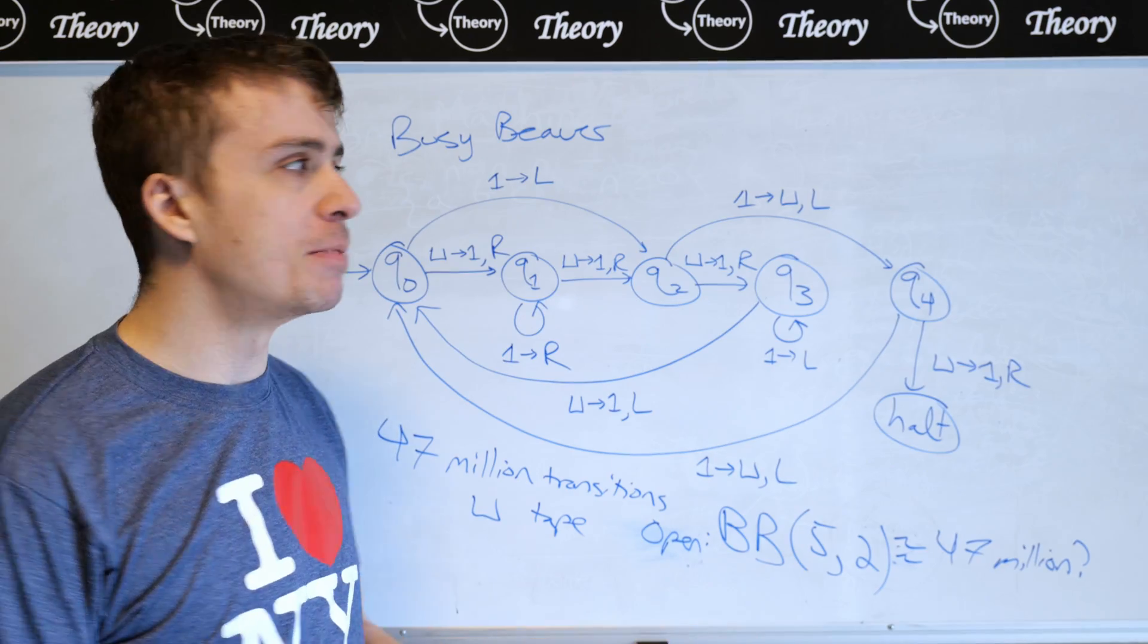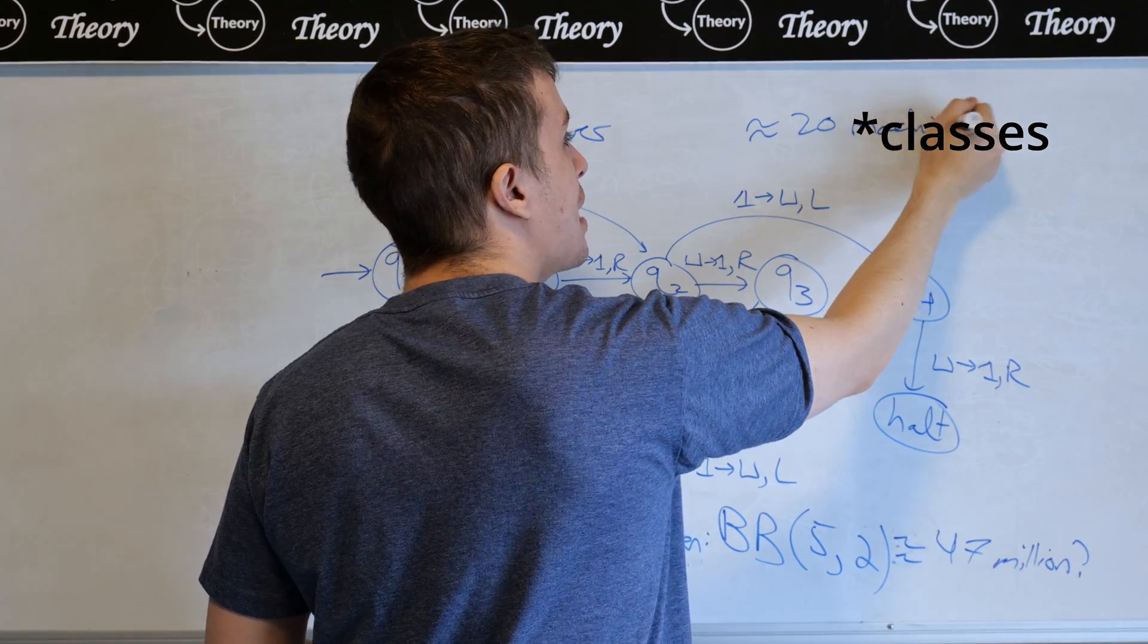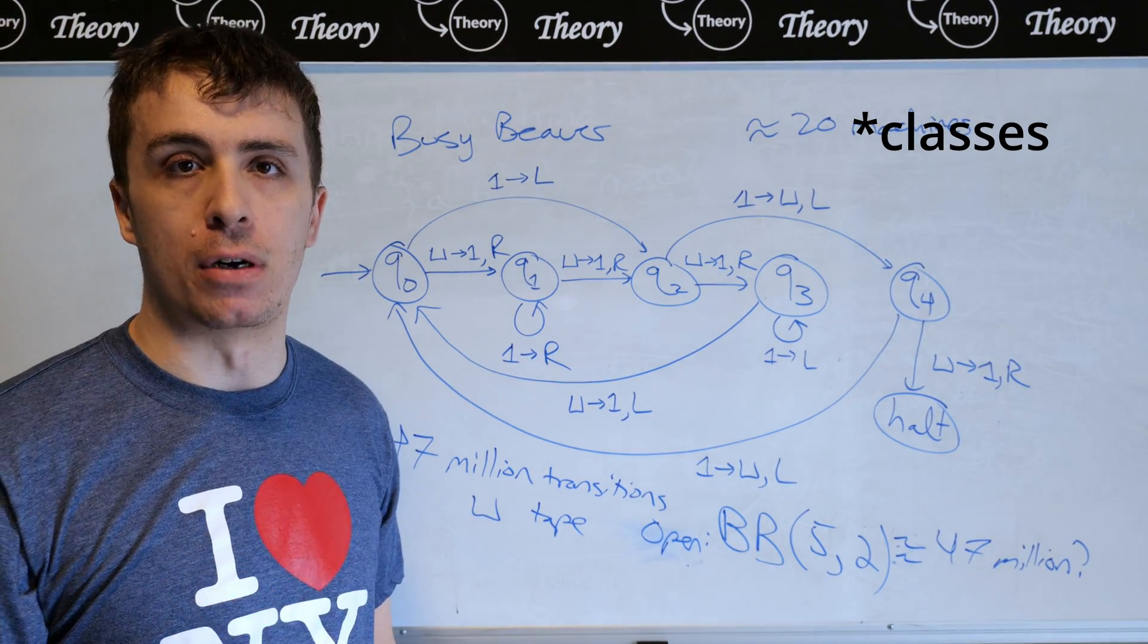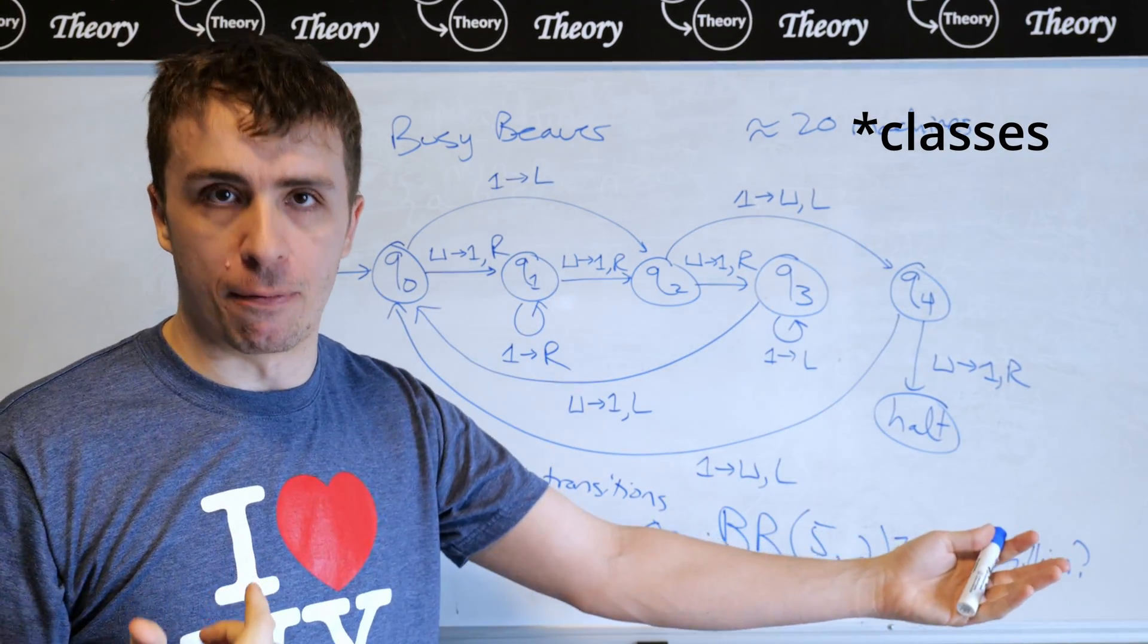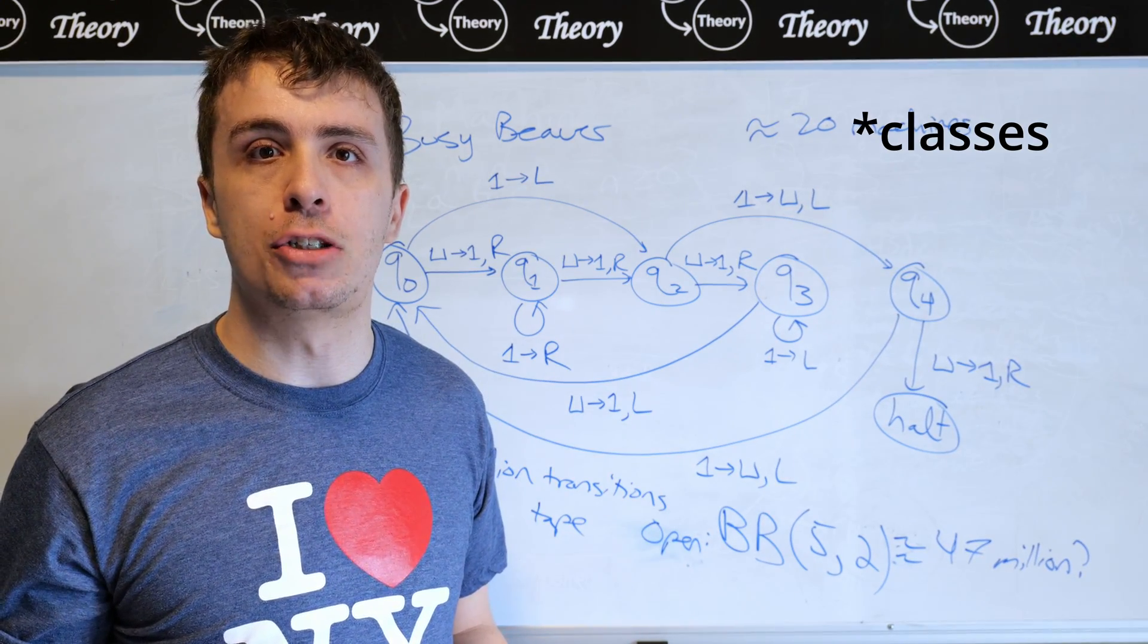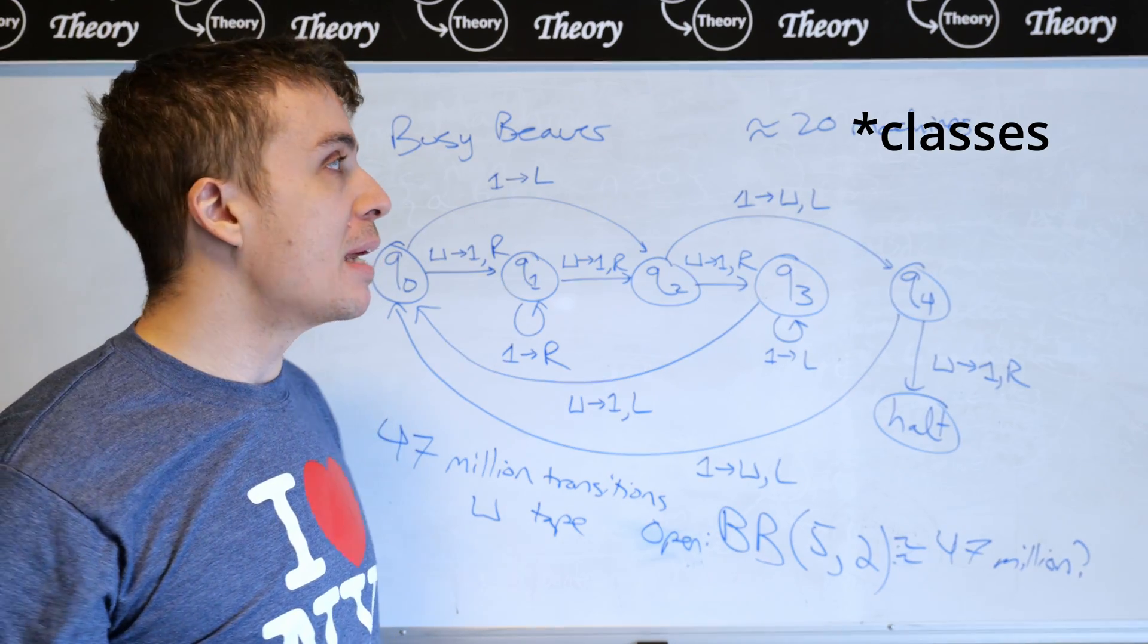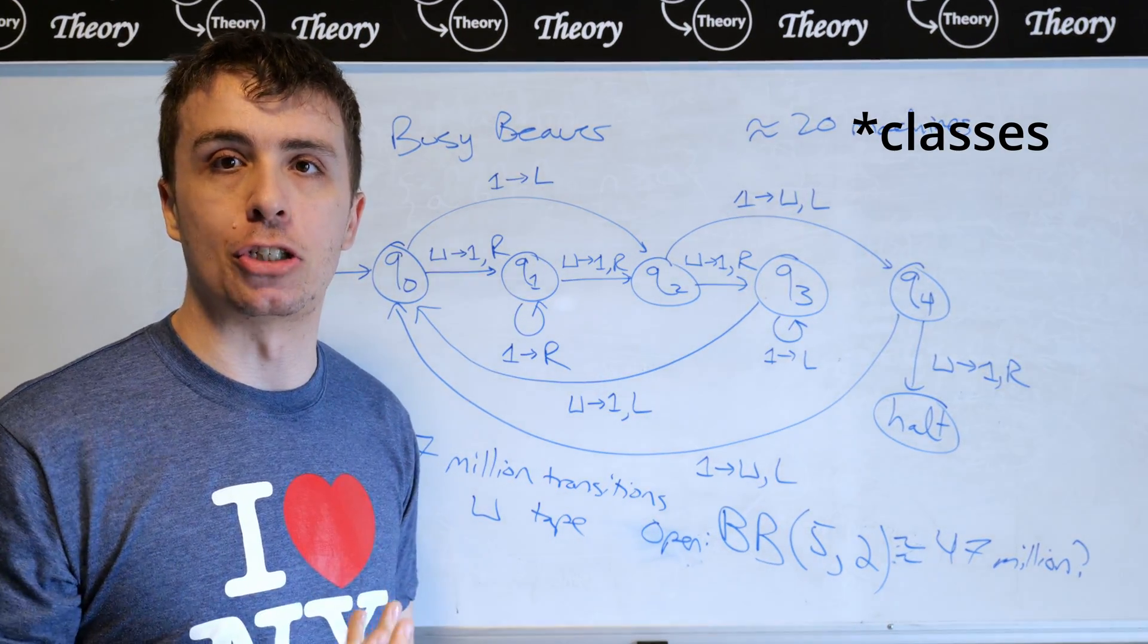Approximately 20 machines are remaining. So there are 20 Turing machines that we haven't actually formally proven that they ran forever, but we believe that they run forever if you just start simulating them for a sufficiently long time. So if we can resolve the status of these 20 Turing machines, roughly 20 machines.